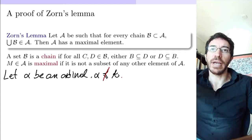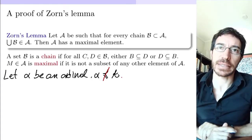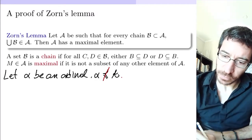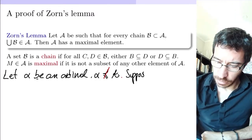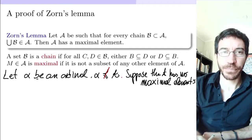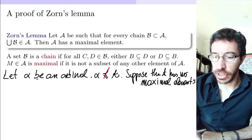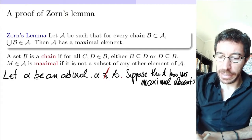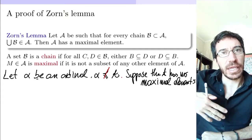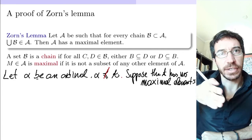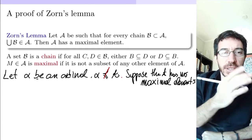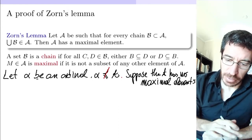So eventually we have to run out of elements and find a maximal element. So let's do that proof. Suppose that A has no maximal elements — we're going to get a contradiction by building, if there are no maximal elements, an infinite chain of length alpha: essentially a map from alpha to A that is one-to-one, contradicting that alpha is not dominated by A.